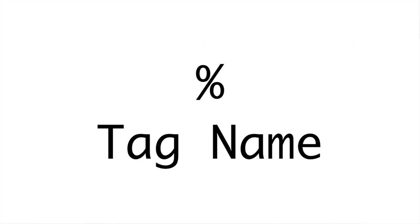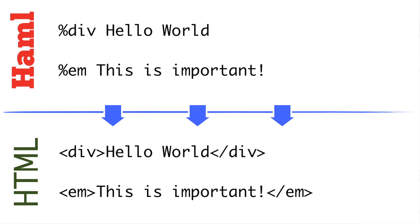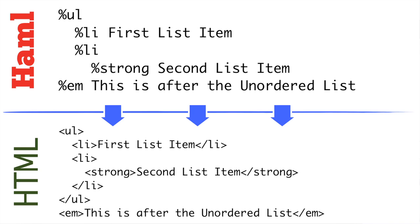To define a tag, we use the percentage sign for the tag name. In this example, we're using %div to define a div tag, and the text after it is placed inside of our div tag — so we can see our div with hello world inside. We can also create an emphasis tag by using %em and passing it some content. We can also nest our tags together: creating a ul tag, and then by indenting the lines beneath it, we're saying those tags should be inside the ul tag. We have an li with the text 'first list item,' and another li with a strong tag nested inside with 'second list item.' Finally, an emphasis tag out-dented to the same level as the ul tag means the emphasis is not inside the ul tag but immediately after it.